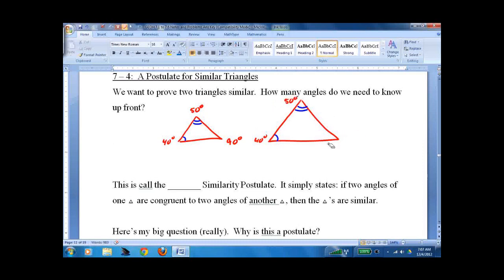So, once you have two angles, you know the third angle has to be congruent. So, all we need is two angles. We call this the angle-angle similarity postulate. If we know that two angles congruent to another, we know that the triangles are similar.